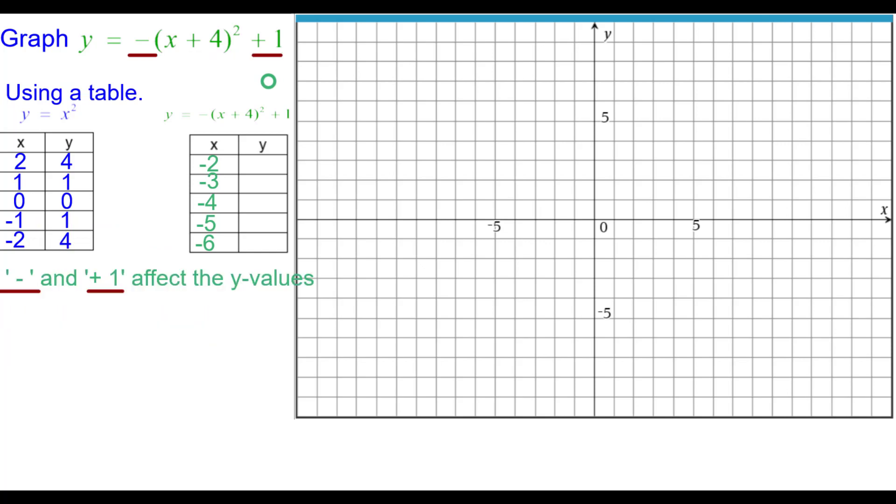The other two parameters affect the y values. By the order of operations, we do the opposite first and then we add the 1. So taking the opposite of 4 as negative 4 and adding 1, we get negative 3. You can see the calculation right here.